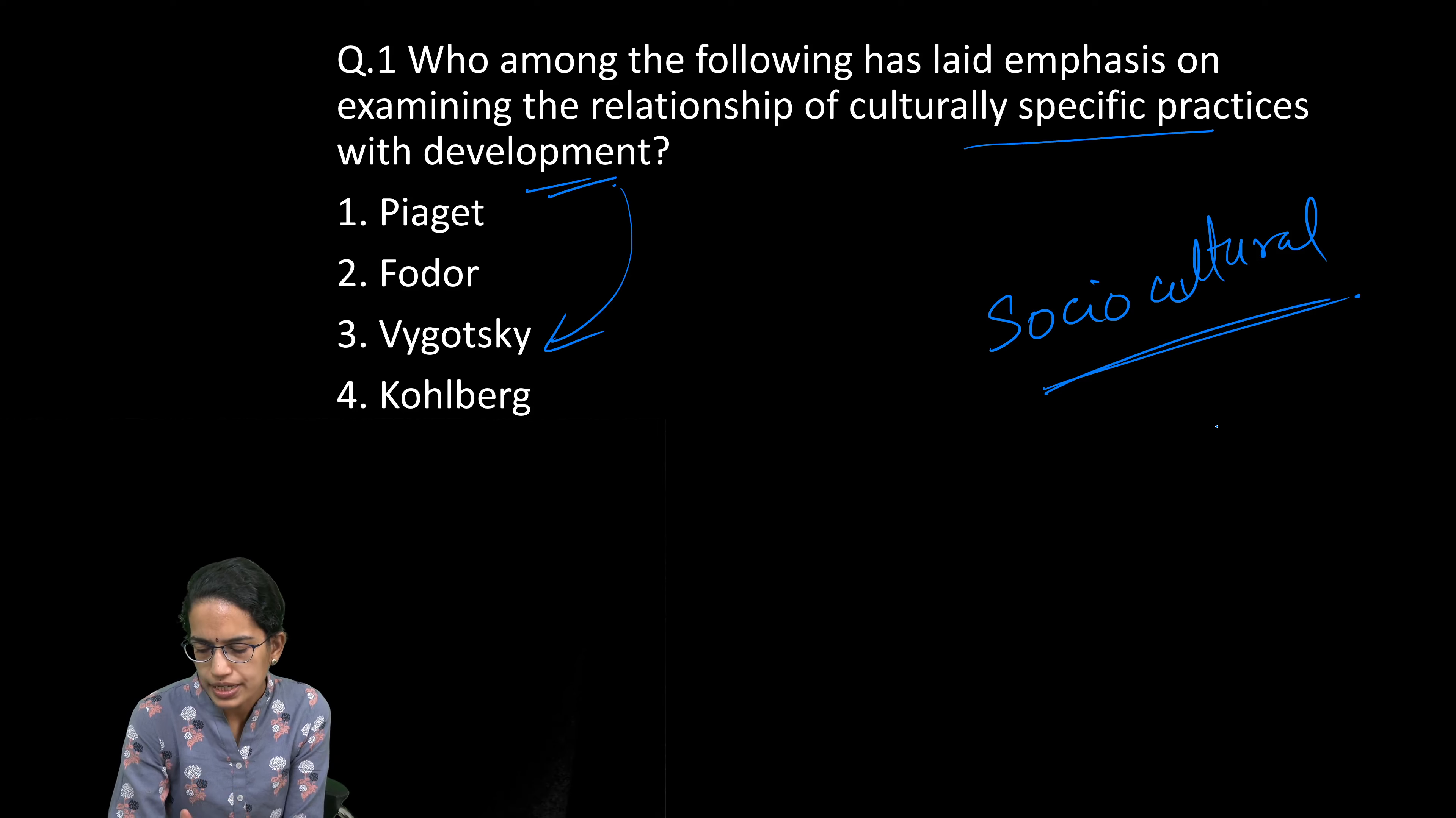Vygotsky is the right answer. Jean Piaget talked about cognitive development. Fodor was a scientist who talked mainly on interdisciplinary concepts of mental representation and development of sentences in natural language.